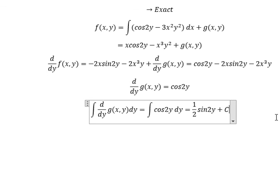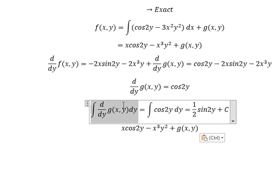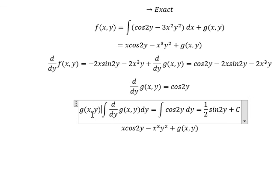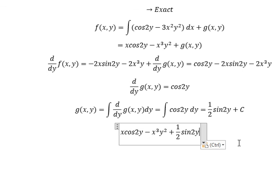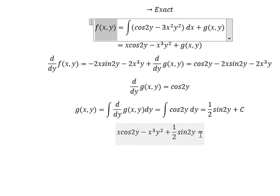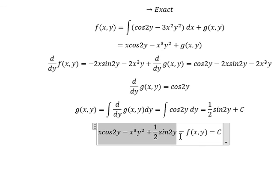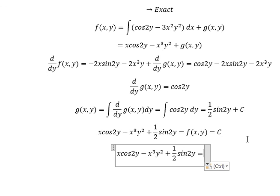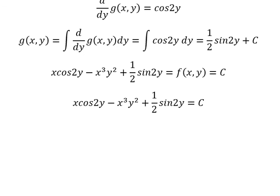And I will put the constant C. Now going back, the integration gives 3xy. So I will put this here. We know that F(x,y) equals C. Now we can simplify. This is the end — thank you for watching.